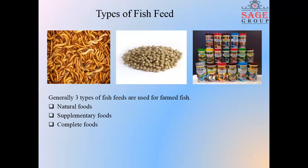Types of Fish Feed. Generally, three types of fish feed are common in India for farming fishes: number one is natural foods, number two is supplementary foods, and number three is complete foods.